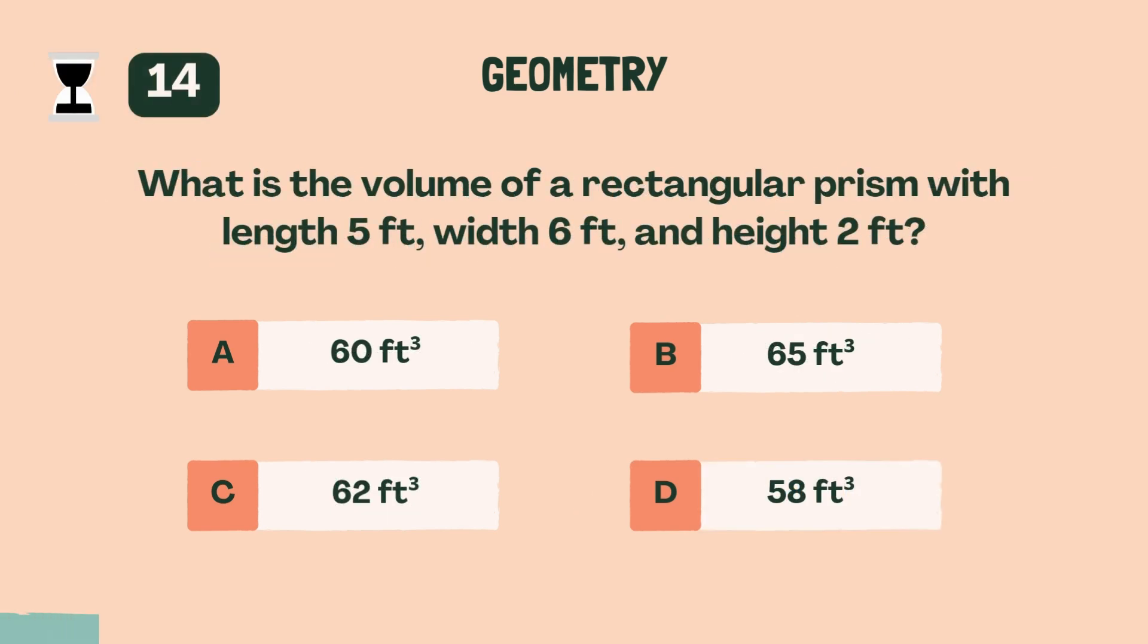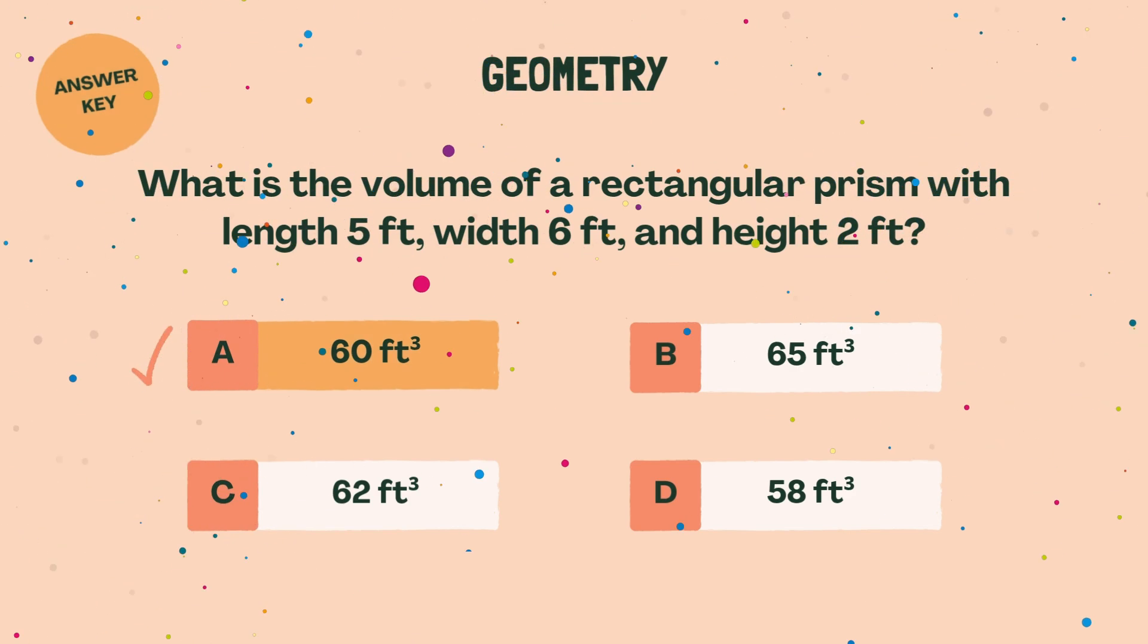What is the volume of a rectangular prism with length 5 feet, width 6 feet, and height 2 feet? A, 60 cubic feet.